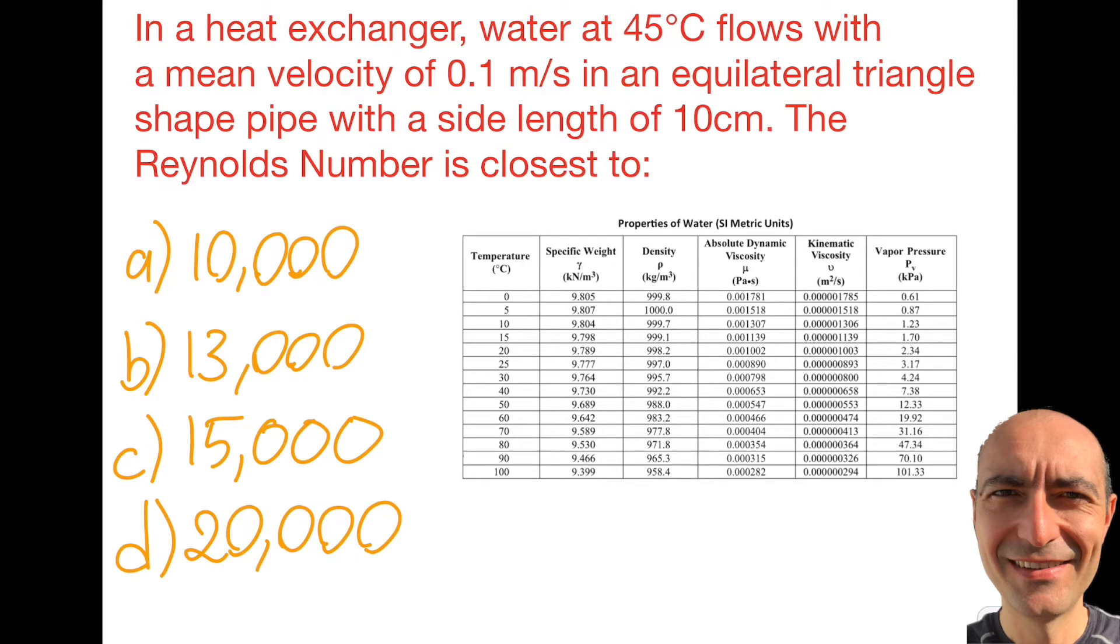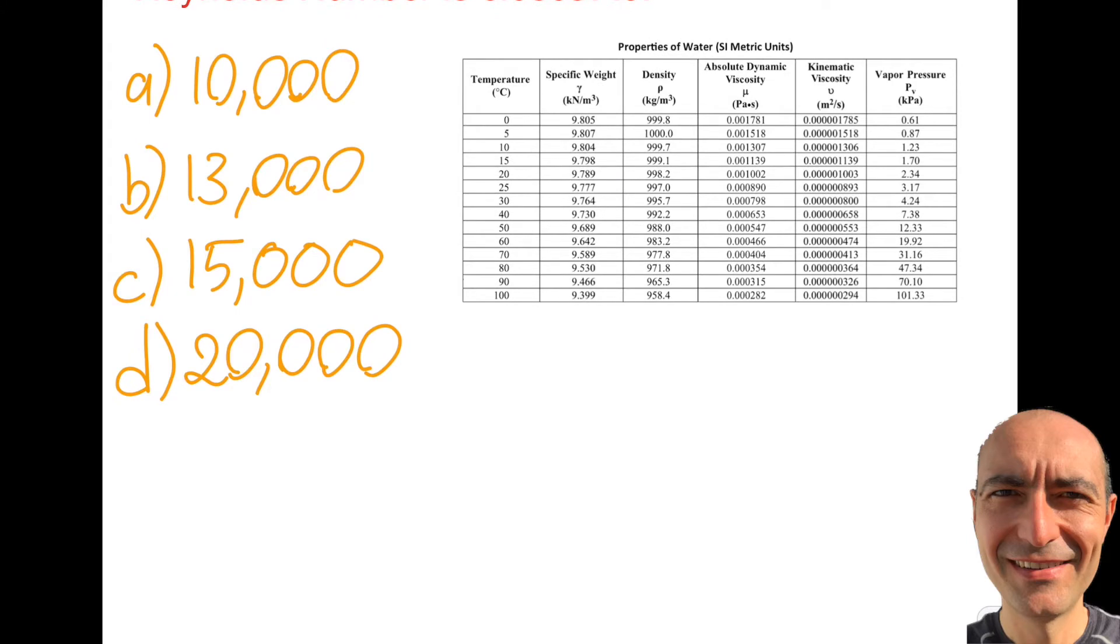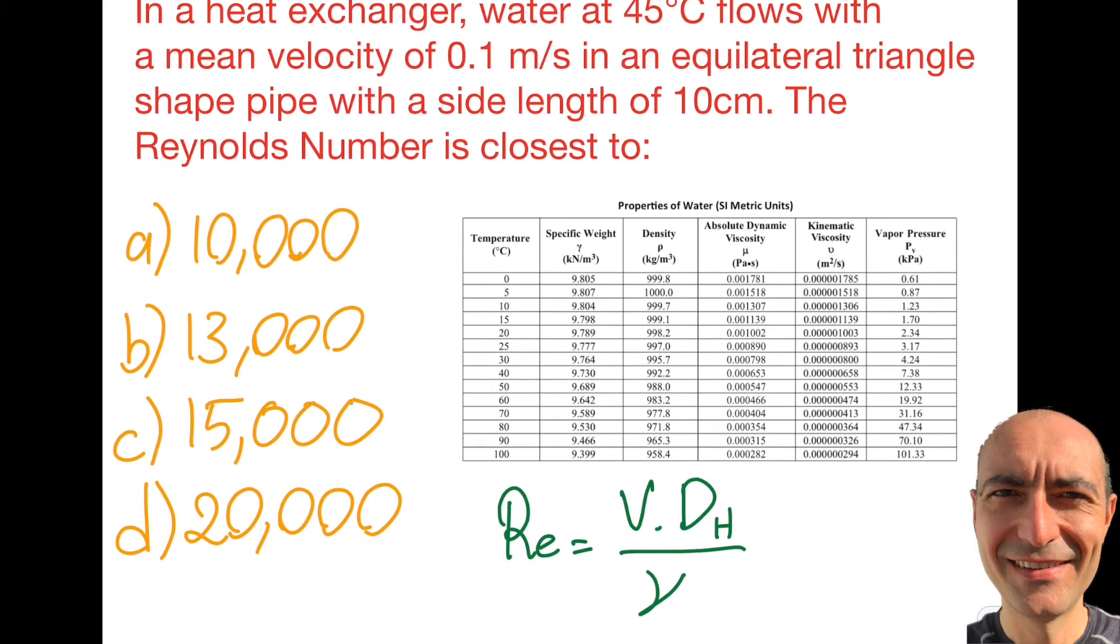First of all, I gave you this particular table again. It is on page 198 of the reference manual 10th edition. Let's write the Reynolds number definition. It's going to be the velocity times the hydraulic diameter divided by the kinematic viscosity.